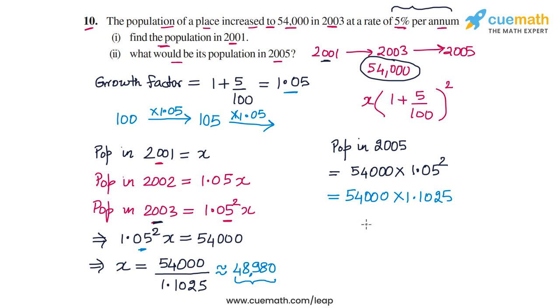And this roughly comes out, rounded off, to be 59,535. So the population in 2005 will be 59,535. So this is the question, this is the answer to question 10. The population in 2001 was 48,980, and in 2005 it will be 59,535. So that completes question number 10.